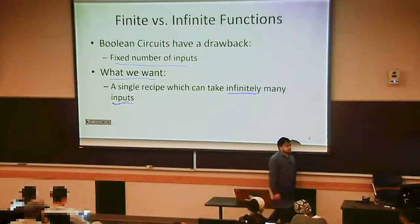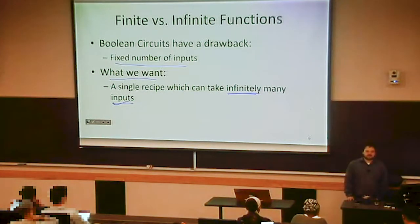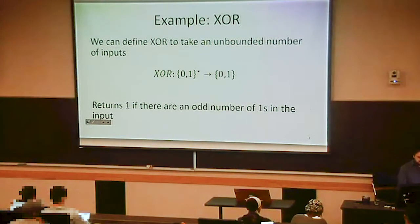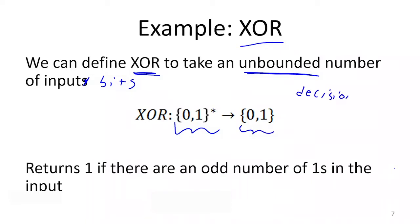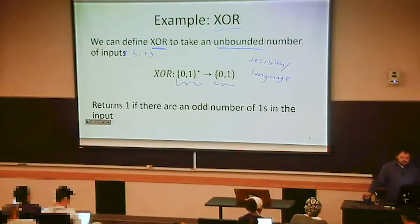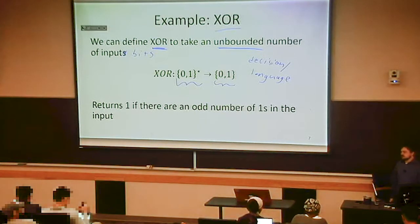So the next step is to move beyond Boolean circuits to a model of computing that can handle some of the functions we've discussed. An example of one of these infinite functions is the infinite XOR, where we define an XOR that can take any unbounded number of input bits. We take any string of ones or zeros as input and produce a zero or one as output. We can think about this as a decision problem — are there an odd number of ones? — or as a language: all strings with an odd number of ones.